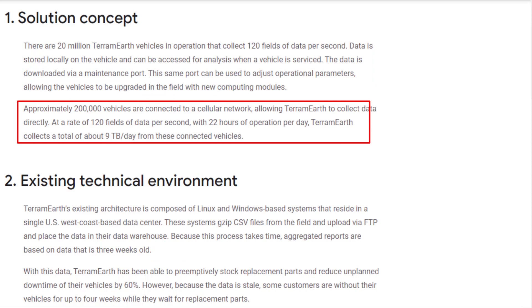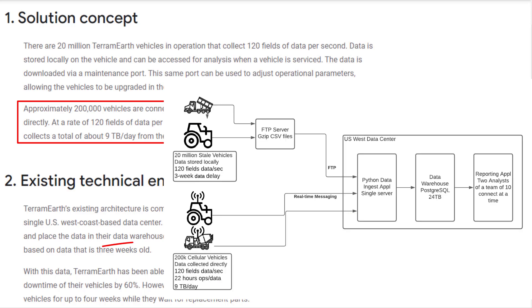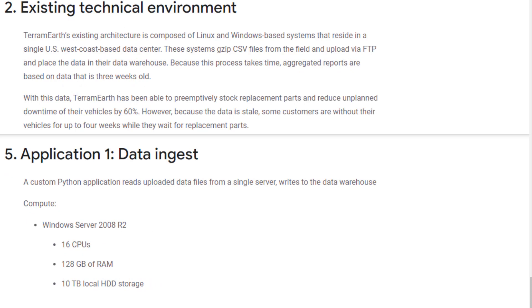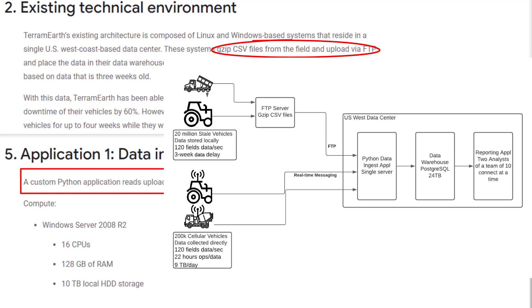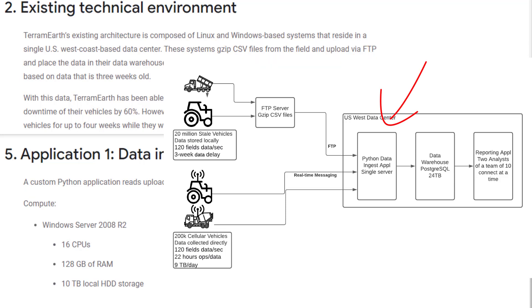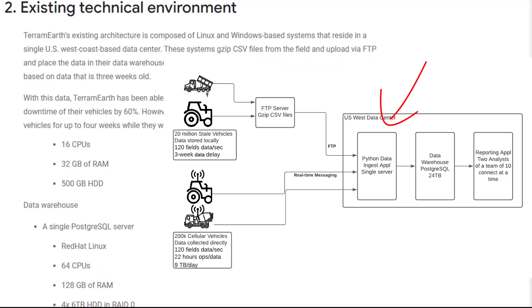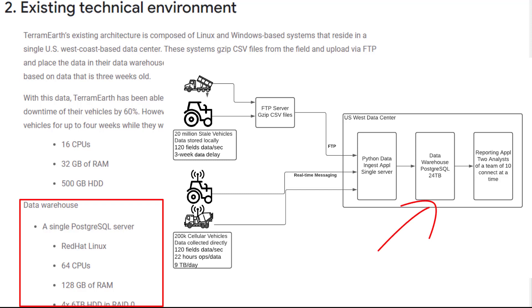Another 200,000 vehicles are connected to a cellular network with data collected directly — 120 fields of data per second — with 22 hours of operation per day, totaling about 9 terabytes per day from those cellular vehicles. The data is ingested through a Python application, either via FTP from the cell vehicles as gzipped CSV files, or via real-time messaging from cellular vehicles with direct data collection. The Python application does the ETL and writes the data into a single PostgreSQL data warehouse with a total of 24 terabytes.